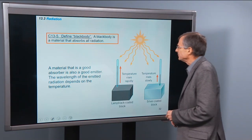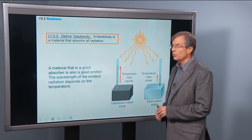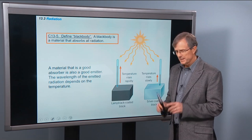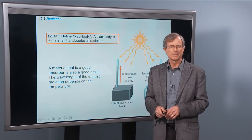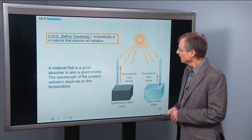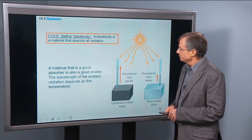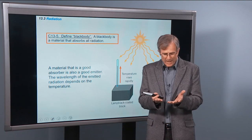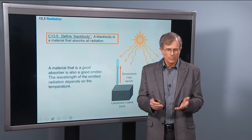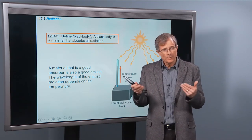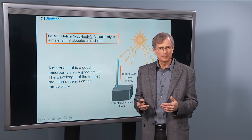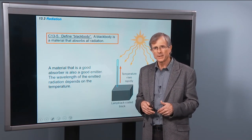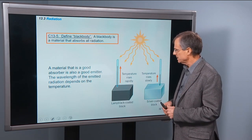Define a black body. A black body is a material that absorbs all radiation. That's the defining characteristic of what we call a black body. A flat black surface will absorb most light and reflect very little.